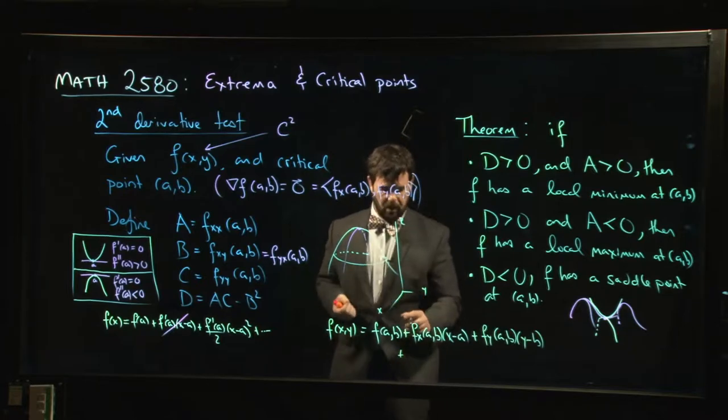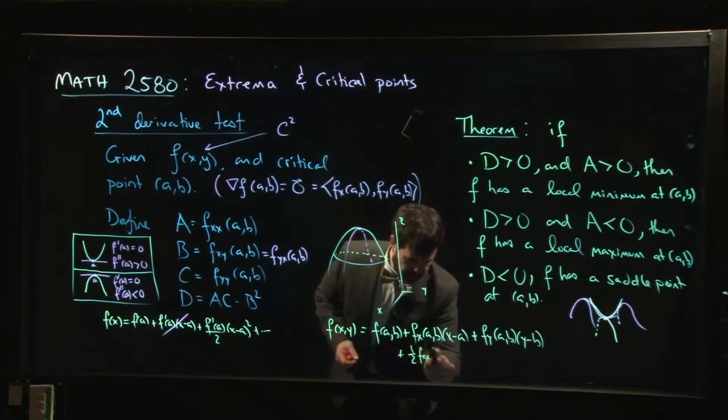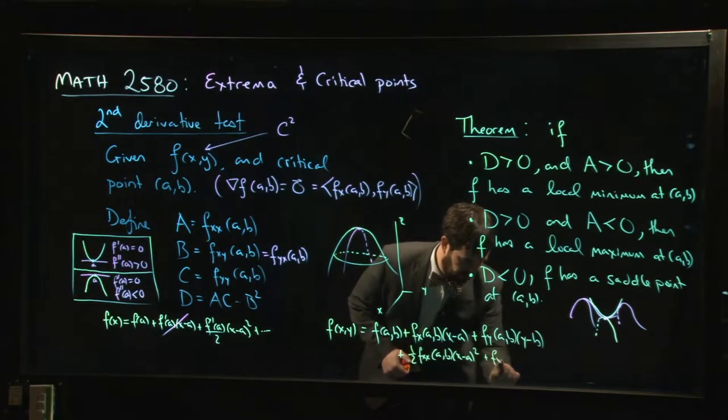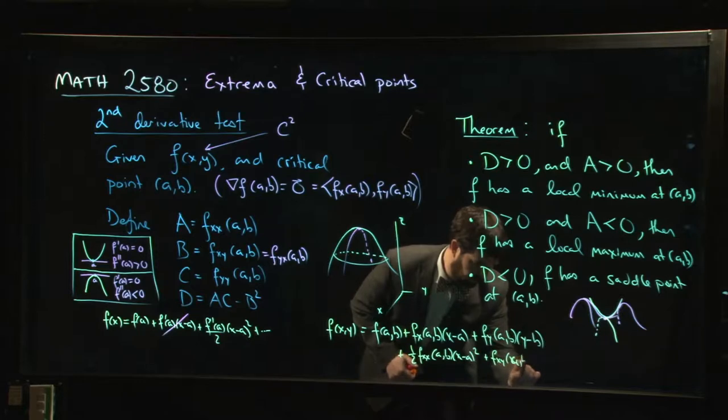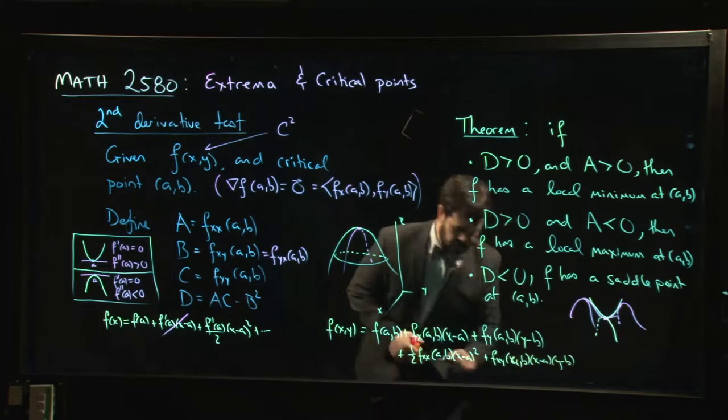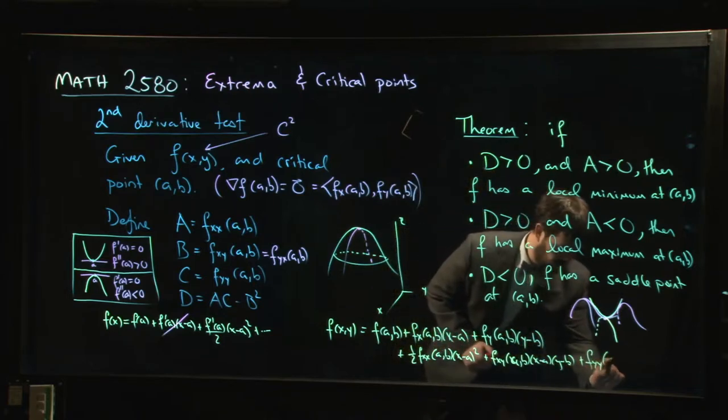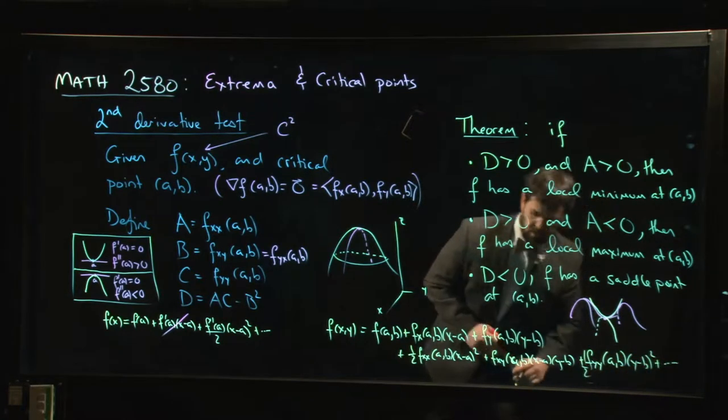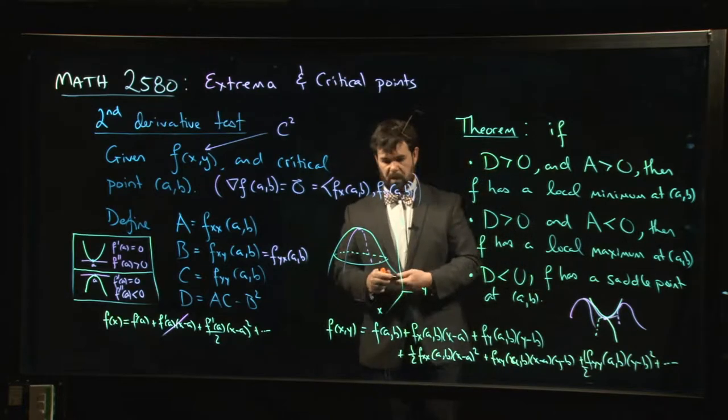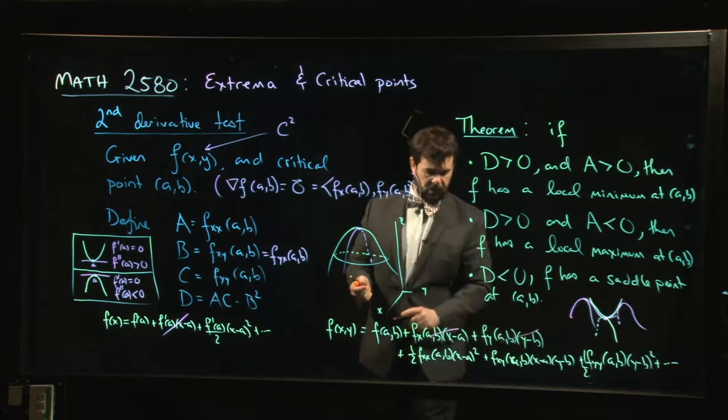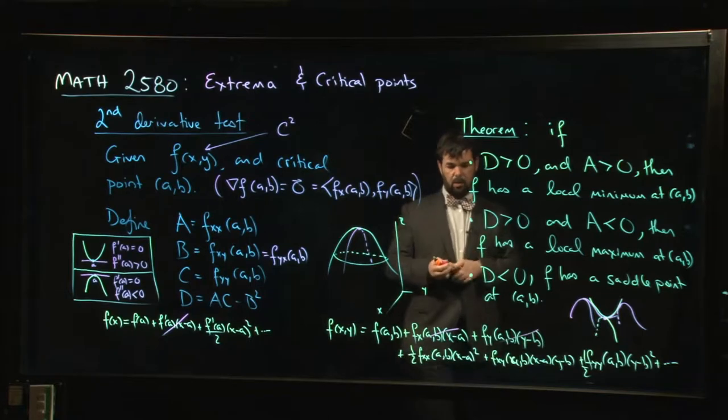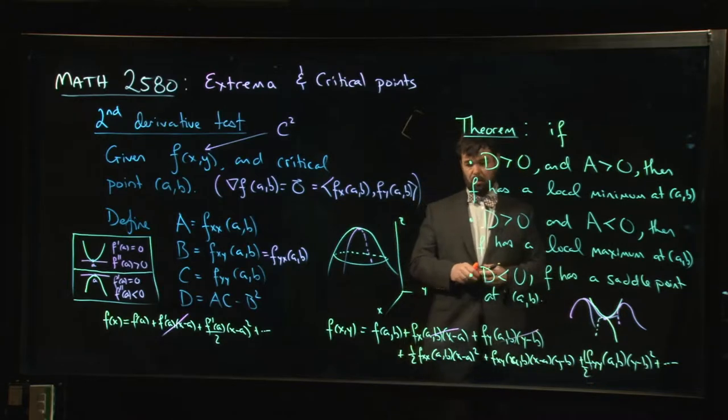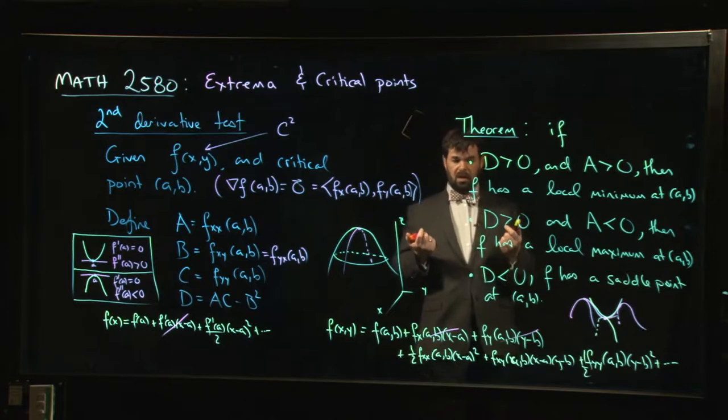One half times f_xx at (a,b) times (x minus a) squared plus f_xy at (a,b) times (x minus a)(y minus b), and then f_yy times (y minus b) squared, one half out front. You get something that looks like that. And just like we had over there, if we're at a critical point, this is zero, this is zero, so that's gone, that's gone. And so you have something which looks like, here's an x squared term, an xy term, and there's a y squared term.